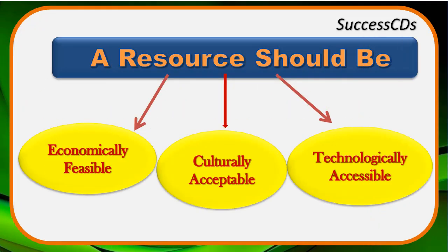In order for an object to become a resource, it must satisfy three criteria. First, it should be economically feasible. Economically feasible means that you should not put in too much money for it to become a resource. For example, in order to give electricity to a large building, we cannot use solar energy as a resource because solar cell panels have a silver lining which makes it a very expensive resource to use.